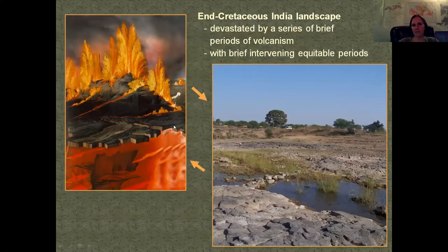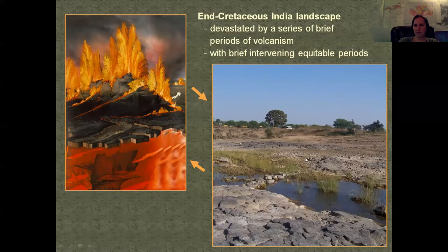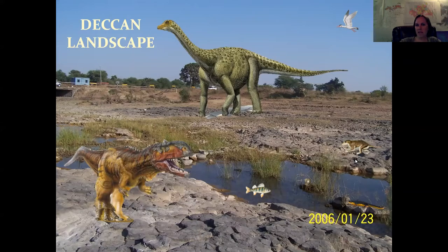This is how it happens: volcanism destroys everything, creates havoc, then ends. Then you have a nice period where everything comes back, and little lakes form in the basalt themselves. Here's what it might have looked like — dinosaurs walking around on these basalts, with lakes containing fish, little mollusks, reptiles, amphibians, and even little mammals. These in-between periods could be anywhere from tens of thousands of years to a couple hundred thousand years depending on what was going on.